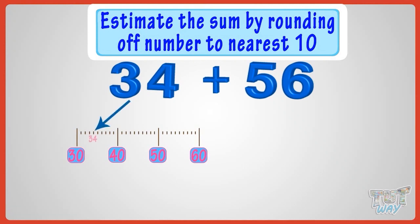Rounding off thirty-four to the nearest ten, we will get thirty as thirty-four is below the five mark. Rounding off fifty-six to the nearest ten, we will get sixty as fifty-six is above the five mark.